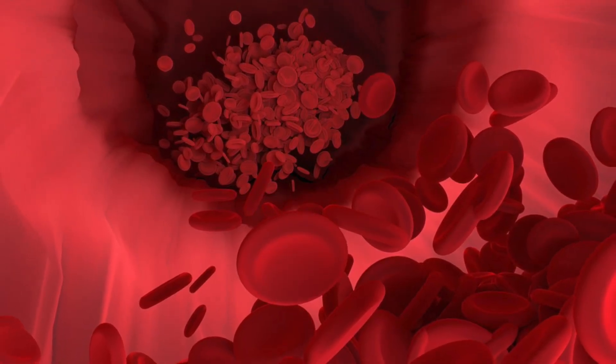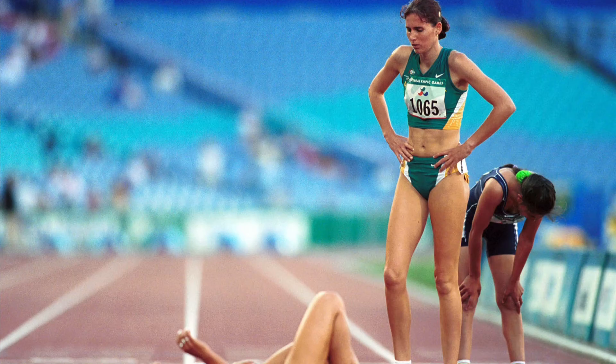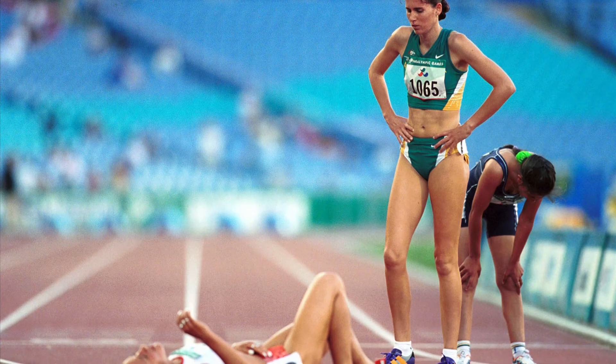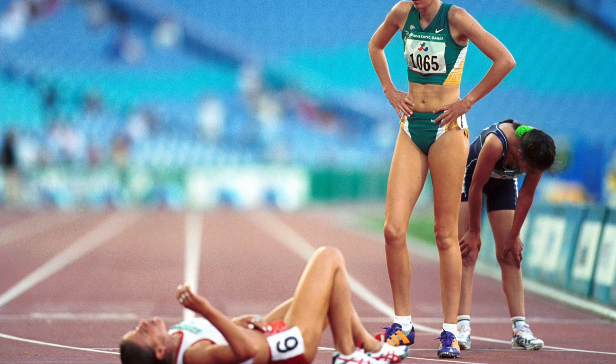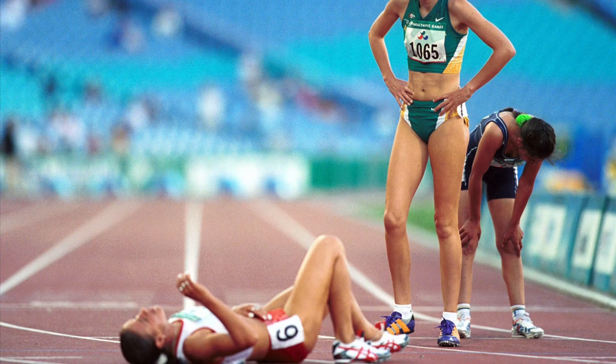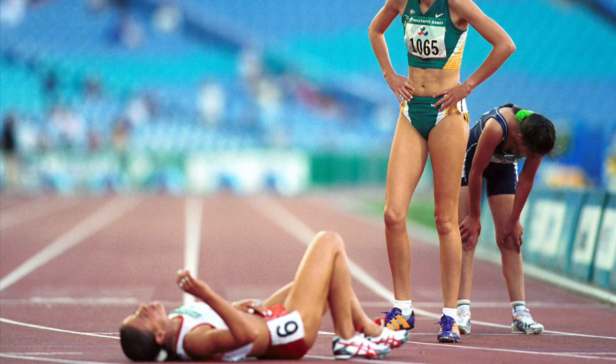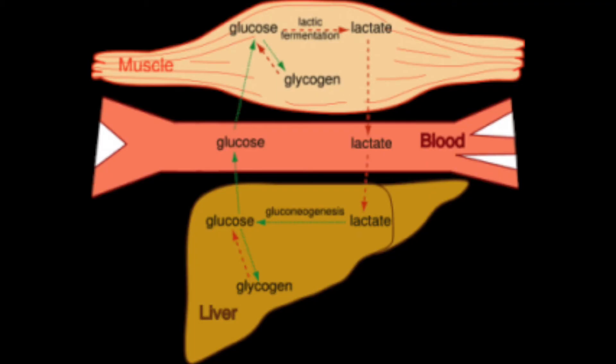One significant role of the liver is dealing with the lactic acid that is produced during anaerobic respiration. Blood flowing through the muscles transports the lactic acid to the liver, where it is converted back to glucose. Once the lactic acid has been converted back to glucose and the glucose has been broken down in aerobic respiration, this will repay the oxygen debt.